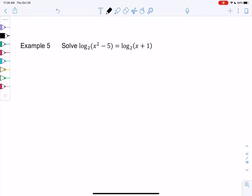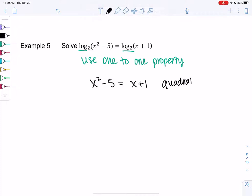We already have single logs, so we can immediately use the one-to-one property. We have the same base on both sides. So we now know that x squared minus 5 equals x plus 1. Since we have x squared, we have a quadratic equation. I'm going to move everything to the left side and we'll solve. Minus x, minus 1. So that'll make the left side 0.